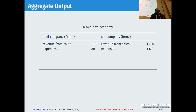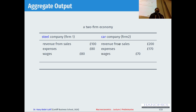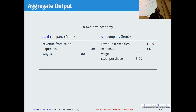To produce output, both firms have costs as well. The expenses in firm one are £80 and in firm two are £170. The expenses in firm one are just wages — how much they pay to labour workers. Firm two pays £70 to workers, but in addition to that, to produce cars you need steel. So they also buy steel from firm one, which is £100. The total expenses for firm two are £170 and for firm one are £80.